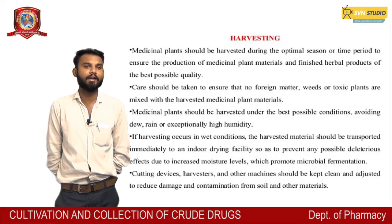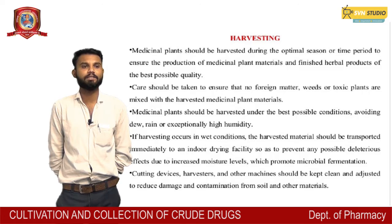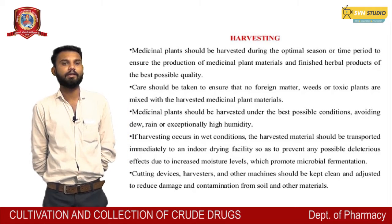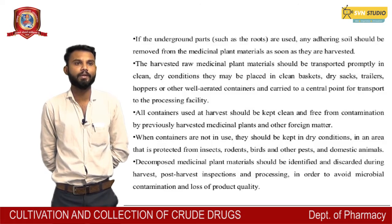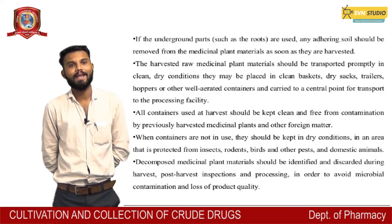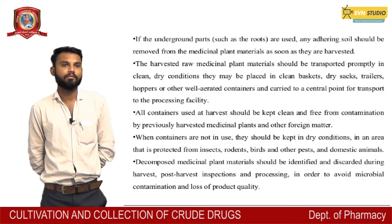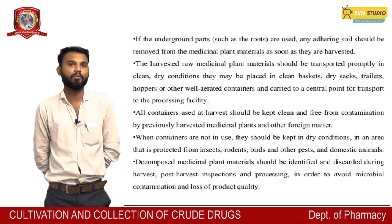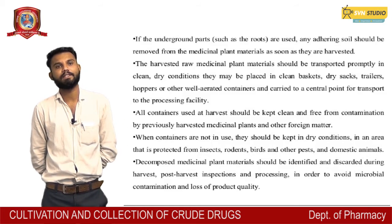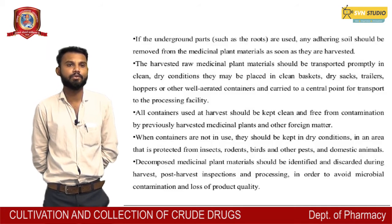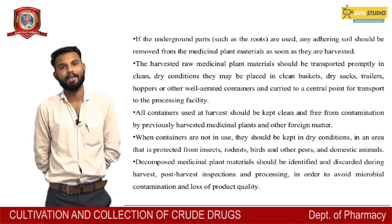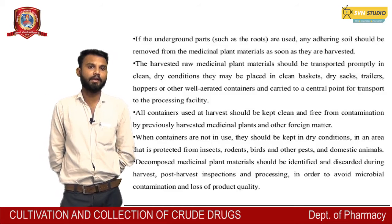Cutting devices, harvesters, and other machines should be kept clean and adjusted to reduce damage and contamination from soil and other materials. If underground parts such as roots are used, any adhering soil should be removed from the medicinal plant material as soon as they are harvested. The harvested raw medicinal plant material should be transported promptly in clean, dry conditions. They may be placed in clean baskets, dry sacks, trailers, hoppers, or other well-aerated containers and carried to the central transport point for the processing facility. All containers used at harvest should be kept clean and free from contamination by previously harvested medicinal plants and other foreign matter.